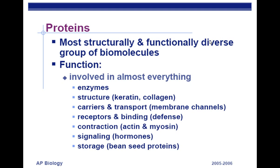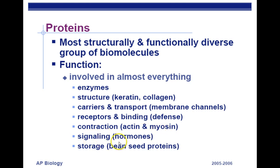Proteins have a huge role in living things. They're involved in enzymes, which are probably one of the biggest roles for proteins. Enzyme proteins are able to put together or break apart other molecules — basically any kind of chemical reaction that happens in a body. You can almost use the definition of life as a highly controlled set of chemical reactions carried out by enzymes. Proteins are also involved with structures like keratin in fingernails, collagen in connective tissue like ligaments and tendons, carriers and transport channels, defense proteins called antibodies, contraction proteins like actin and myosin that make muscles move, hormones like insulin that send signals throughout the body, and amino acid storage in plants.